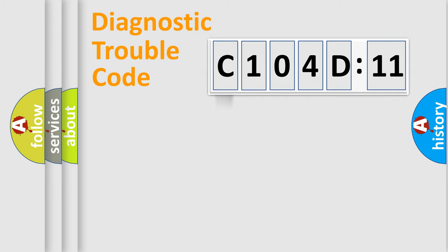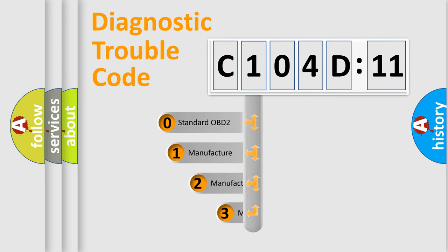Powertrain. Body. Chassis. Network. This distribution is defined in the first character code.